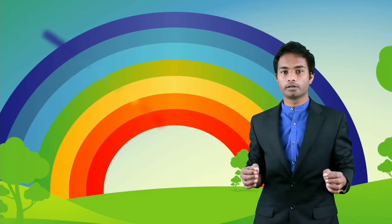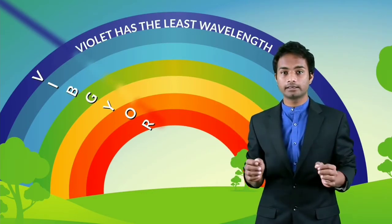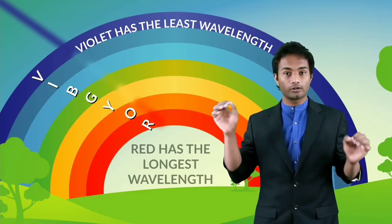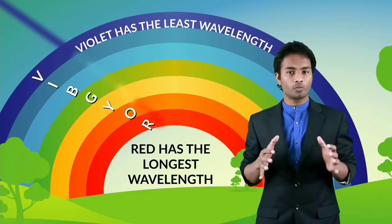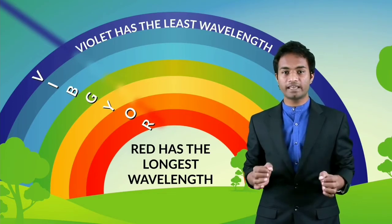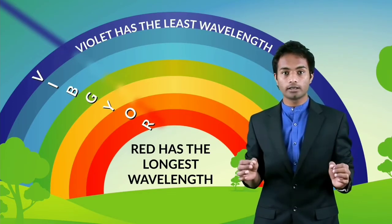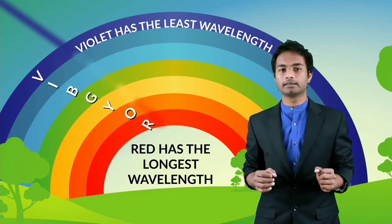Violet has the least wavelength and red has the longest wavelength. And what happens is the colors with the least wavelength get scattered more than the ones with longer wavelength.